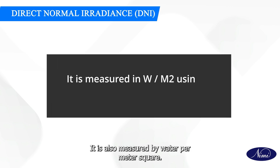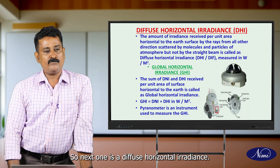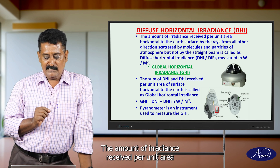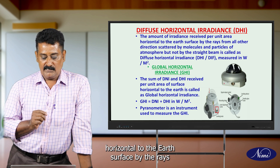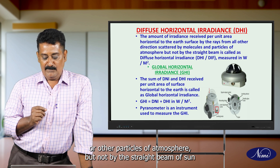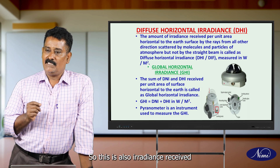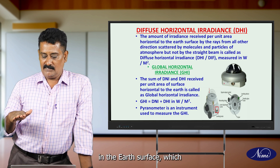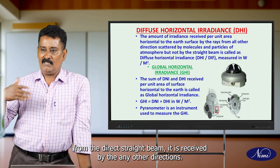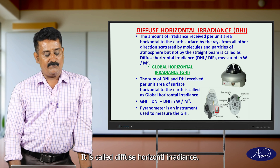Direct normal irradiance is also measured in watts per meter square. It can be measured using an instrument called a pyrheliometer, which you can see in the figure. Next one is diffuse horizontal irradiance, simply called DHI. It is the amount of irradiance received per unit area horizontal to the Earth surface, by rays from all other directions scattered by molecules or other particles of the atmosphere, but not by the direct straight beam of the sun. It is also measured in watts per meter square.